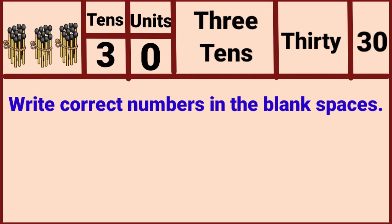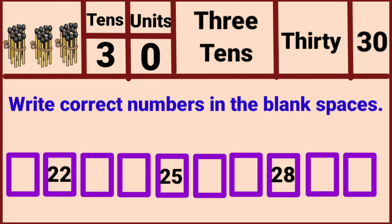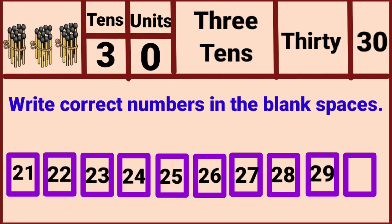Write the correct numbers in the blank spaces. Twenty-two, twenty-five, and twenty-eight are already given. Let's fill these spaces: 21, 22 is already given, 23, 24, 25 is already given, 26, 27, 28 is already given, 29, 30.